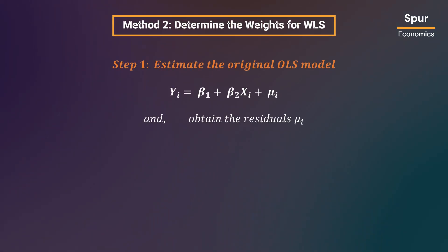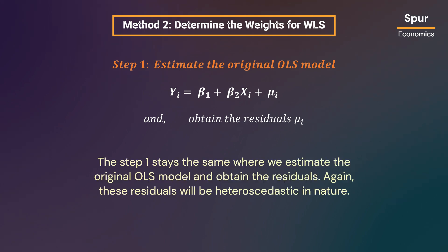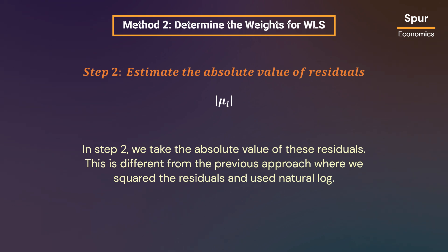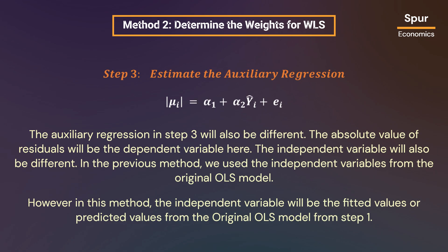Now let us move on to the second method of determining the weights for WLS. Step 1 stays the same — we estimate the original OLS model and obtain the residuals, which will be heteroskedastic in nature. In step 2, we take the absolute value of these residuals, which is different from the previous approach where we squared the residuals and used the natural log. The auxiliary regression in step 3 is also different: the absolute value of residuals is the dependent variable, and the independent variable will be the fitted values or predicted values from the original OLS model from step 1.